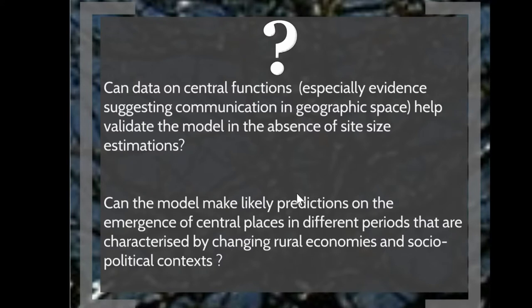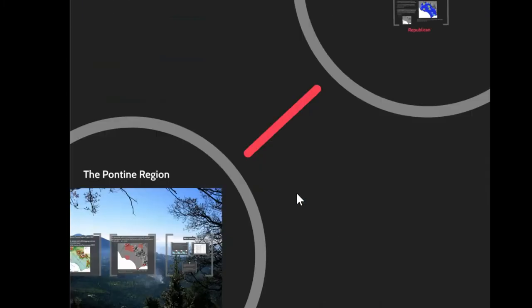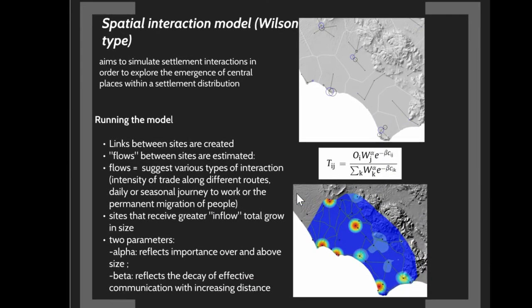Another question we can perhaps answer with these datasets is whether the model can make likely predictions of the emergence of central places in the different periods mentioned — the archaic, republican, and imperial — given the fact that these periods are characterized by different rural economies. Regarding the model: I am using a spatial interaction model introduced by Alan Wilson in the 1970s. This model is used here to simulate interaction between settlements in the Pontine region across the three different periods, in order to understand the emergence of central places in this area.